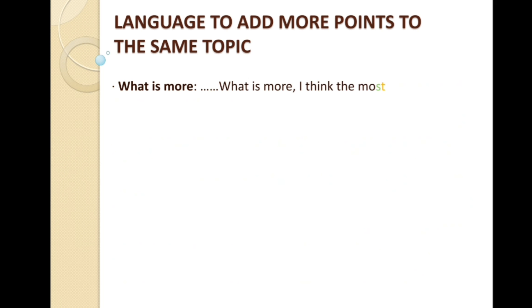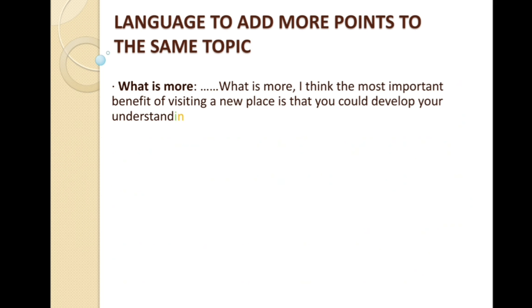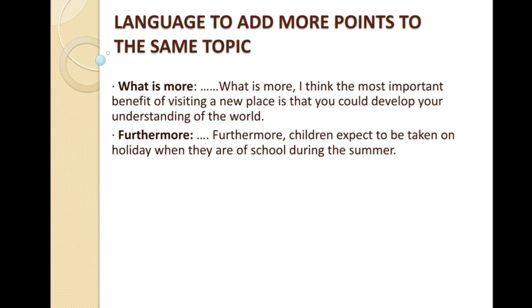Apart from one or two ideas in the same series, when we have to say more ideas, we use 'what is more.' These kinds of words act as connectors when we have to shift from one idea to another smoothly. For example: 'What is more, I think the most important benefit of visiting a new place is that you could develop your understanding of the world.'